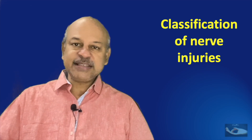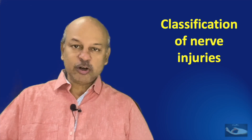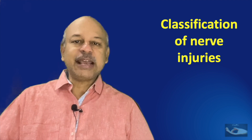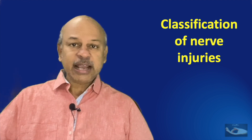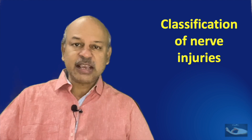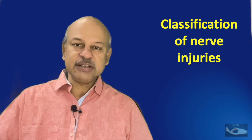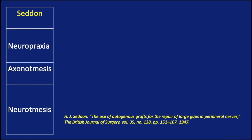We have heard of neuropraxia, neurotmesis, and axonotmesis. What are they, and what happens after each of these types of nerve injuries? How is the recovery? The basic classification system was proposed by Seddon, who described three types of nerve injury: neuropraxia, axonotmesis, and neurotmesis.